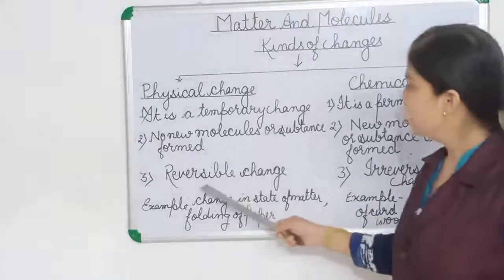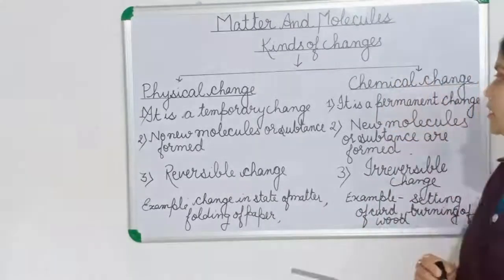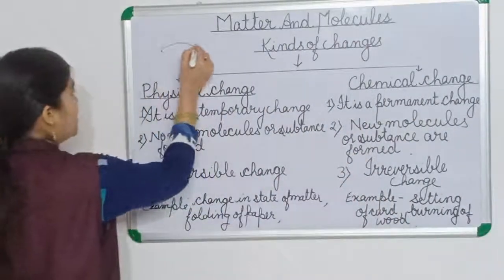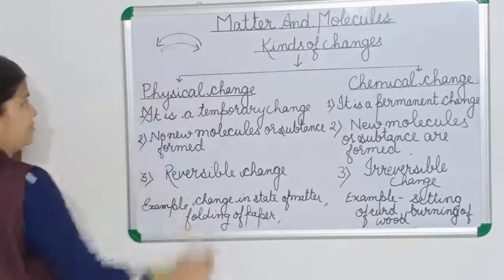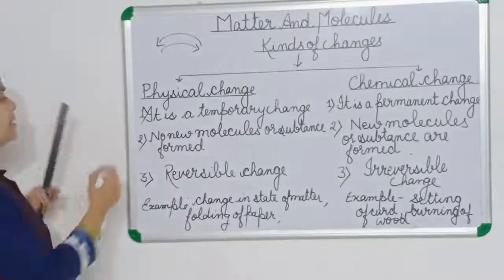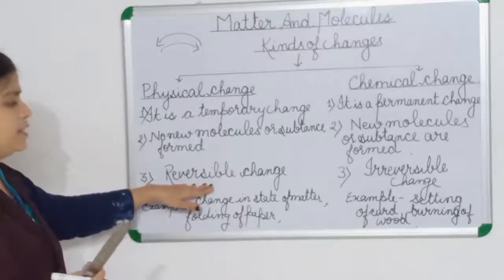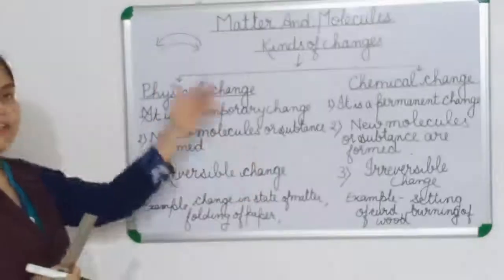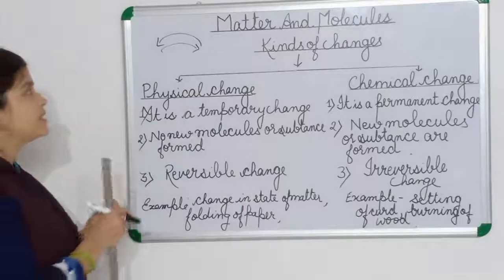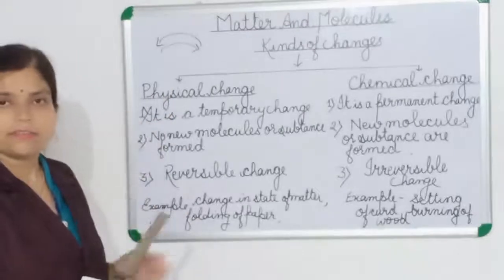Third difference: physical change is a reversible change. Reversible means it occurs in both directions — something changes from this to that, and again it can change back. It is a temporary change that can come back again after the change.